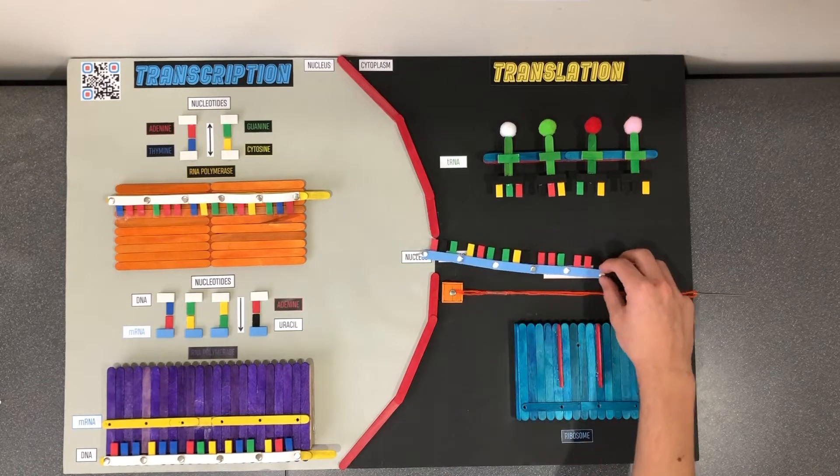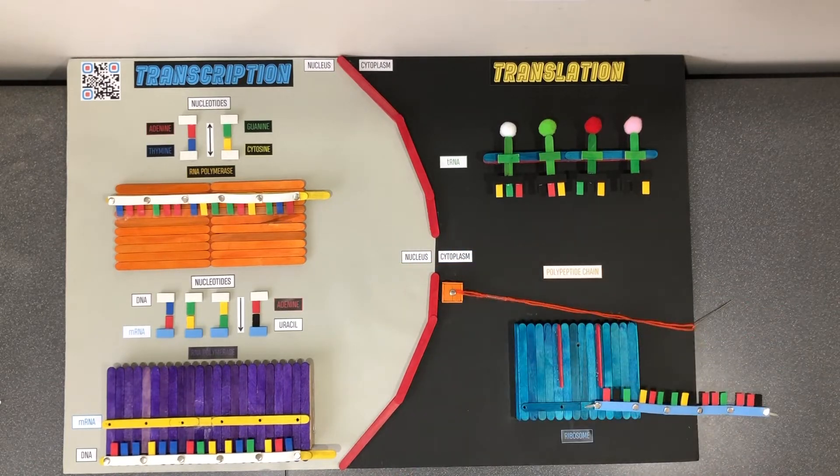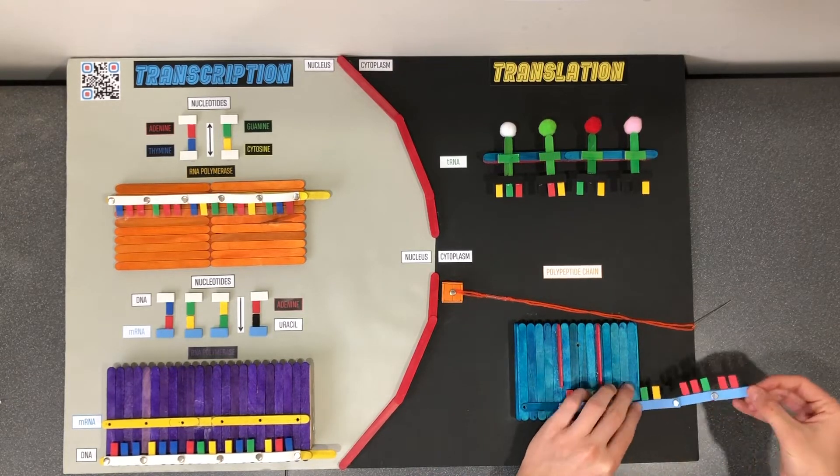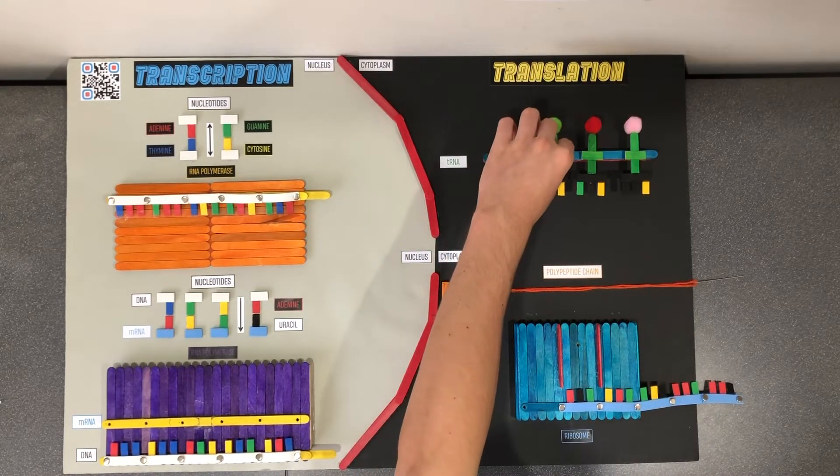After splicing has occurred, the mature mRNA strand will exit the nucleus via a nuclear pore, as indicated by the gap between the red paddle pop sticks, and attach to a ribosome in preparation for translation.